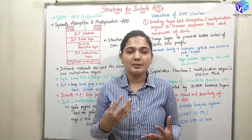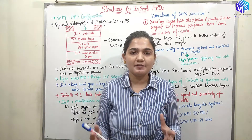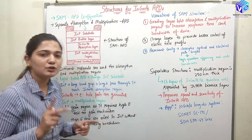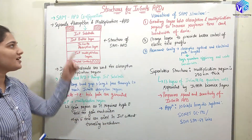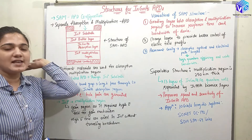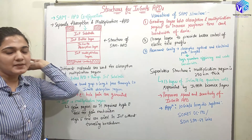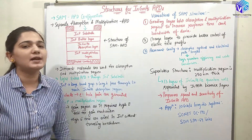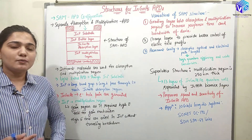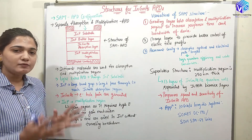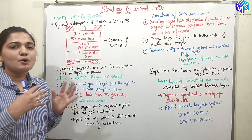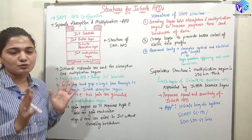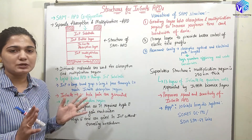What are the indium gallium arsenide APDs? What are the different structures they have? We are going to talk in detail about two structures. The first structure is called the SAM APD configuration and the second structure is the super lattice structure. We are going to see the differences and applications of both of them in this video.